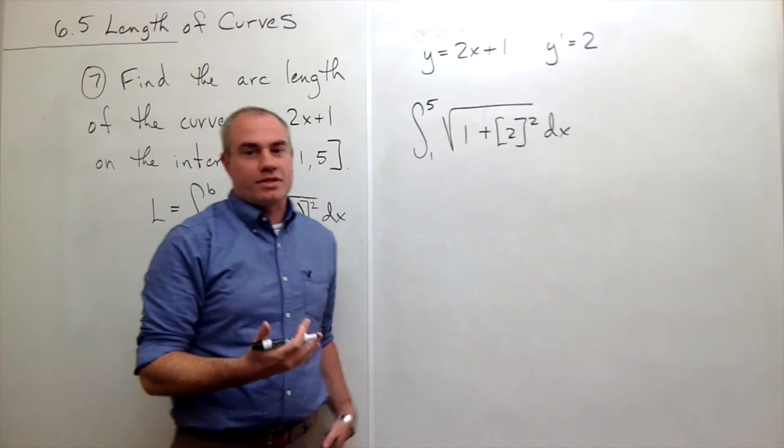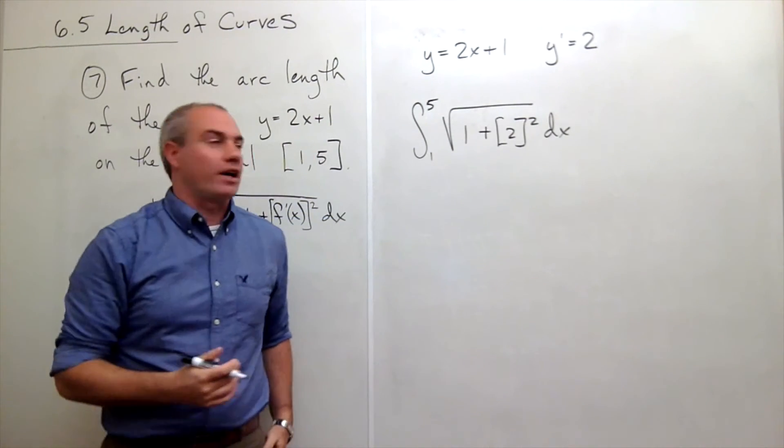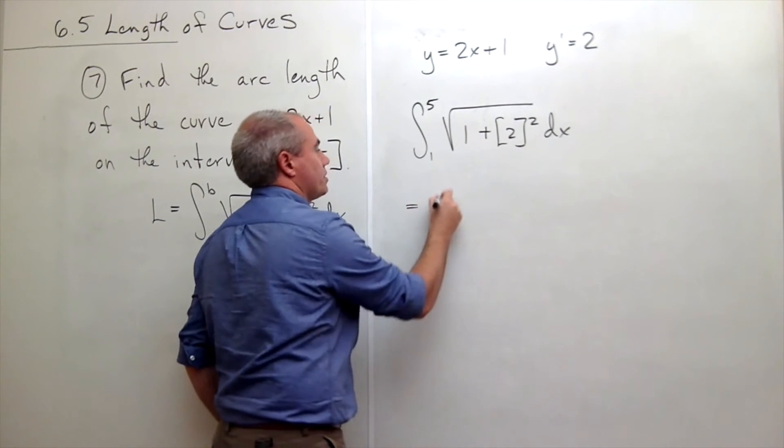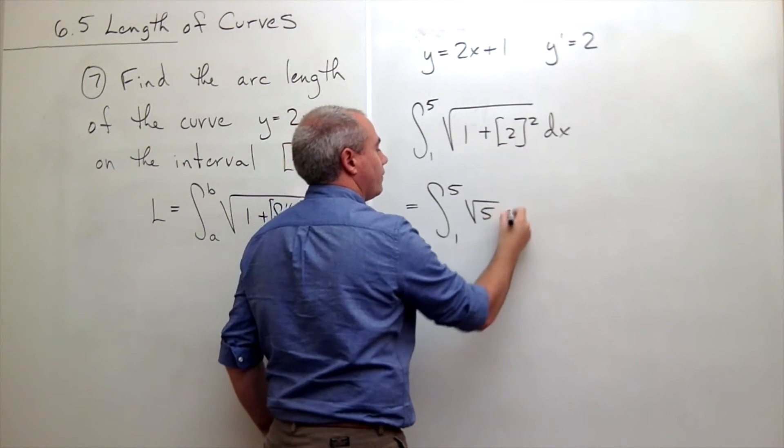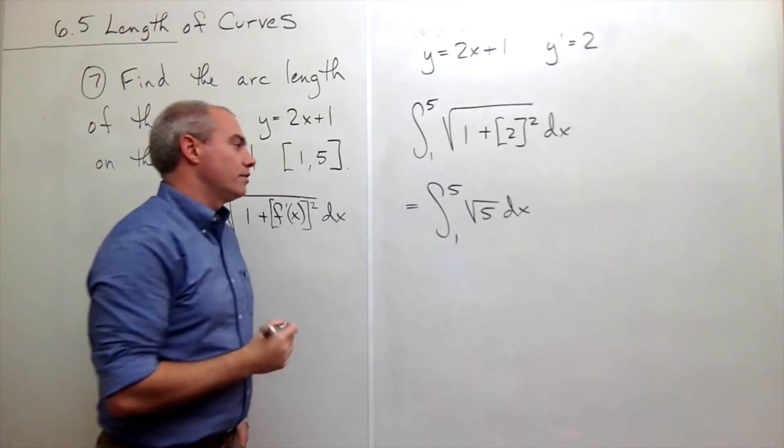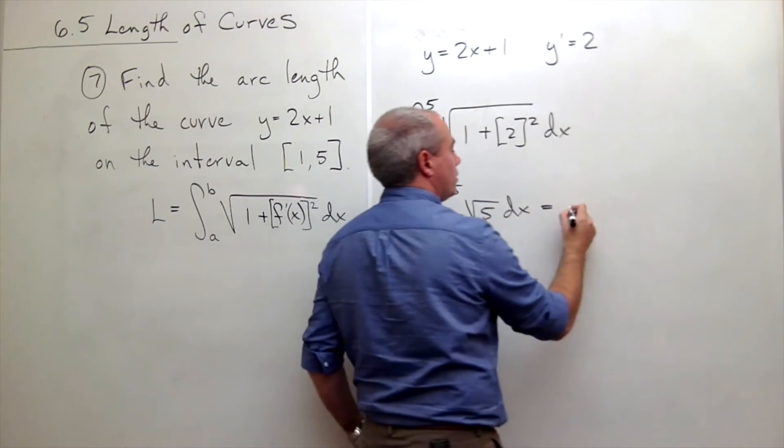As you can see, this is all just one big constant. This is fairly straightforward. So this is just the integral from 1 to 5 of the square root of 5 dx.